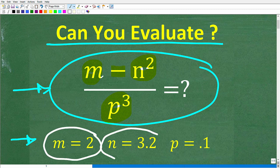So m is equal to 2, n is equal to 3.2, and p is equal to 0.1. Now feel free to use your calculator, but if you can do this problem, go ahead and put your answer into the comments section.